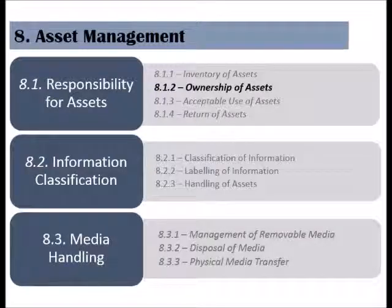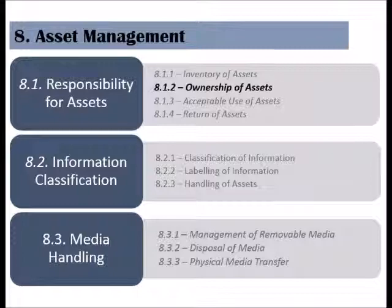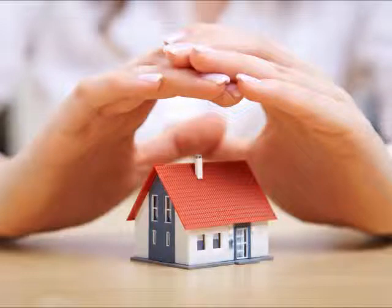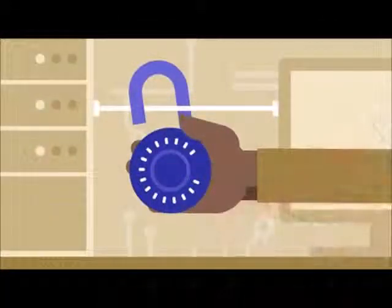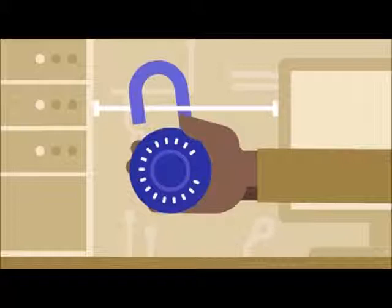The second control of the Asset Management Clause is called Ownership of Assets. This control states that every asset that has been entered into the inventory must have an owner that is responsible for it during its life cycle. An asset owner is an individual who has been given management's approval to utilize that asset and be responsible for its security. An asset owner should ensure the access to the asset he is responsible for is controlled and as per the business requirements and policies.